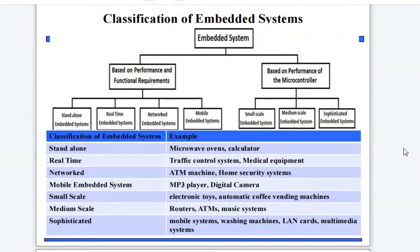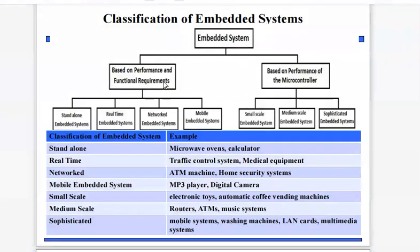Hello everyone. In continuation with the previous video on basics of embedded systems, today we will discuss the classification of embedded systems, the architecture of embedded systems, and the design metrics of embedded systems. In classification, embedded systems are classified into two types based on performance and function requirements, and further divided into four types.